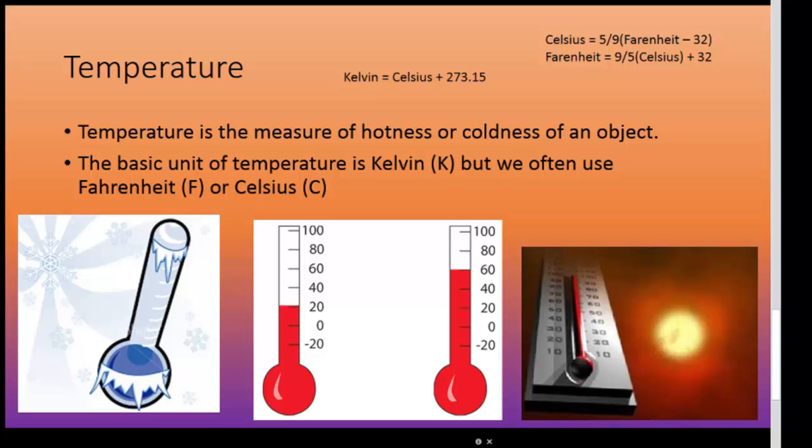Kelvin is the base unit because Kelvin is said to be the most absolute. Zero degrees on the Kelvin scale is the lowest attainable temperature possible. This is why Kelvin is the base unit.